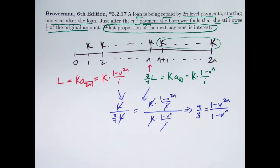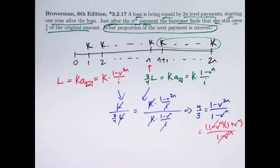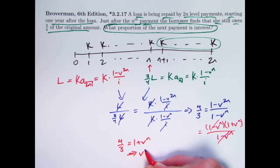I've seen this kind of equation before, back in chapter 1. The top there is the difference of two squares. I can factor it as (1 - V^N)(1 + V^N) and cancel with the (1 - V^N) on the bottom. This gives me four-thirds equals 1 + V^N, which I can solve by subtracting 1. V^N is one-third.